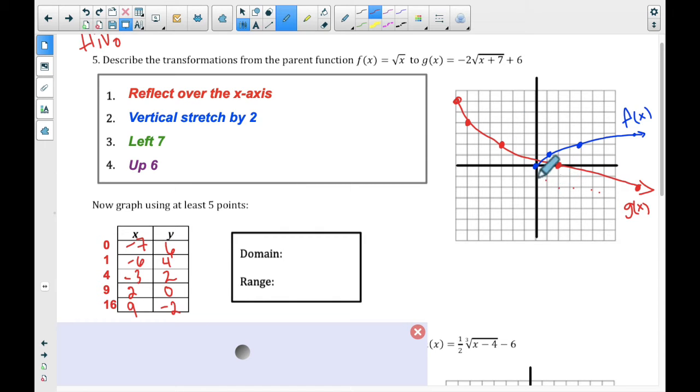Also, it goes left 7 and up 6. And that's our vertex right there at negative 7, 6. So the transformations all match up. In addition, it does follow the 1-3-5 rule with a vertical stretch by 2. So it goes over 1, down 2, over 3, down 2, over 5, down 2, over 7, down 2. So it is following our 1-3-5 pattern with a stretch of 2.